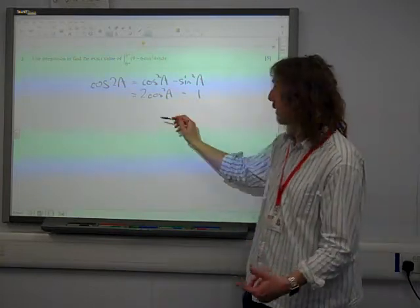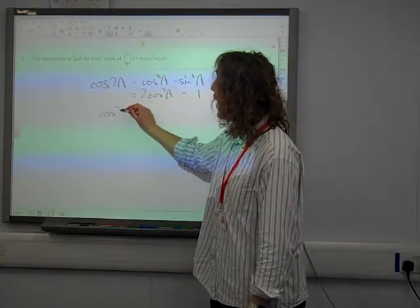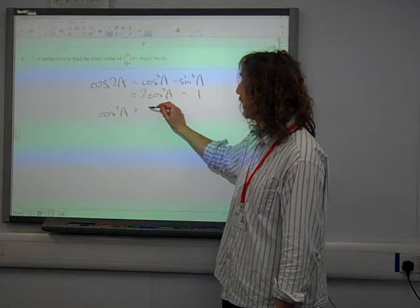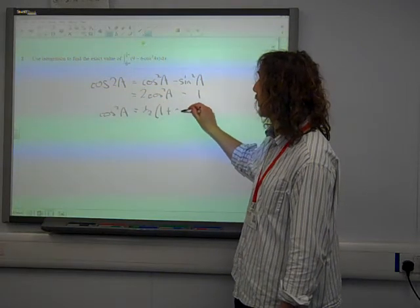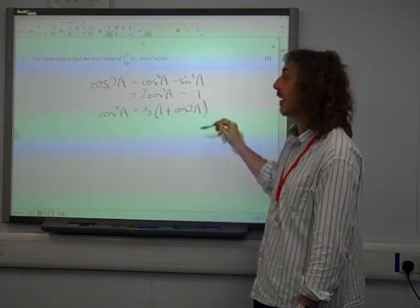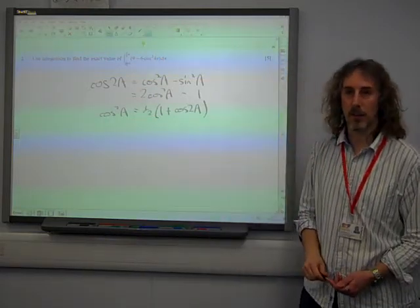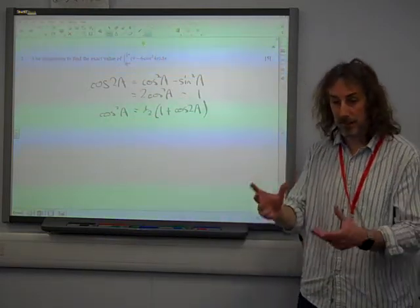If we rearrange that, we can say that cos squared a is half of 1 plus cos 2a. You may be quoted that straight away with that identity. But that's the identity you're using. So now we need to think, how can we use that?